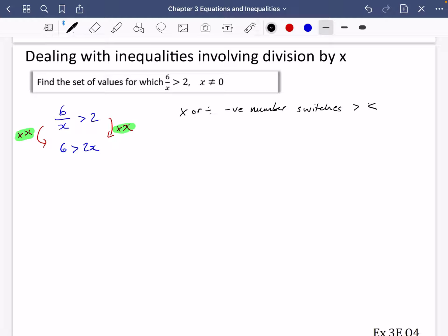So because these x's that I've multiplied could be negative - it could be a positive or negative number - we can't really do that in case the inequality switches around. The way we get around this is we multiply by x squared instead, because x squared will always be positive.